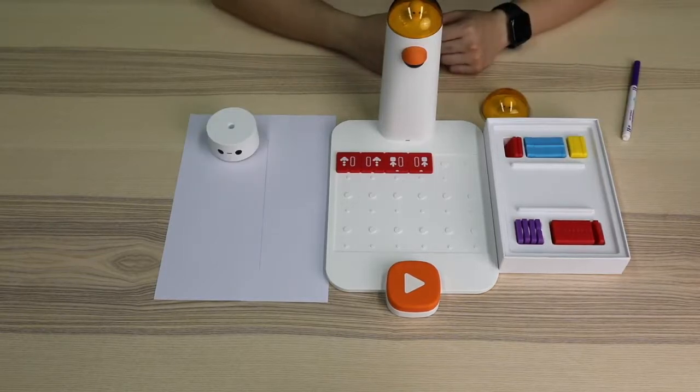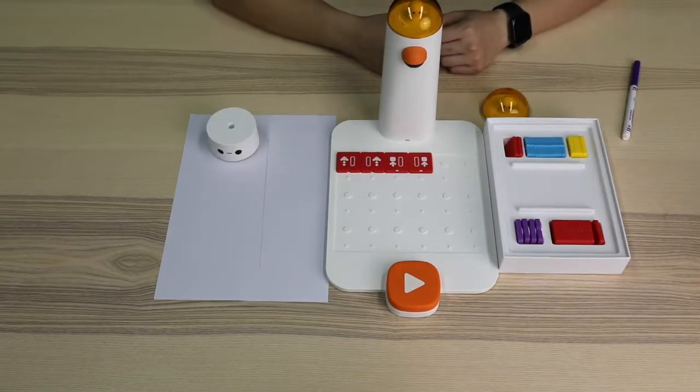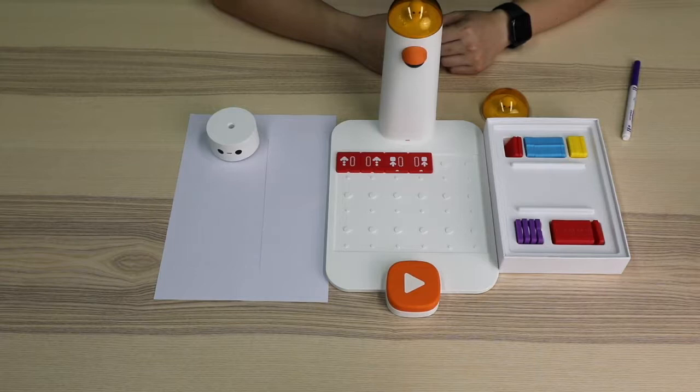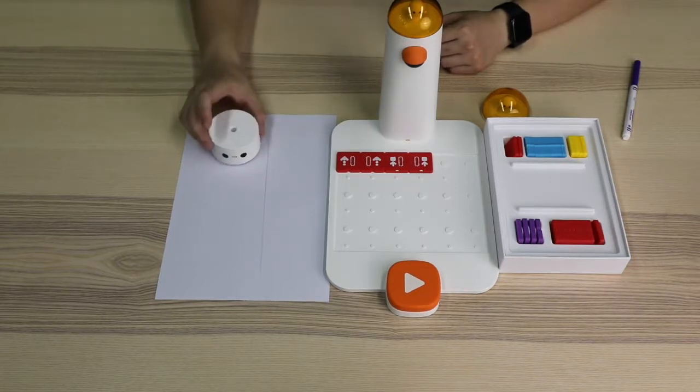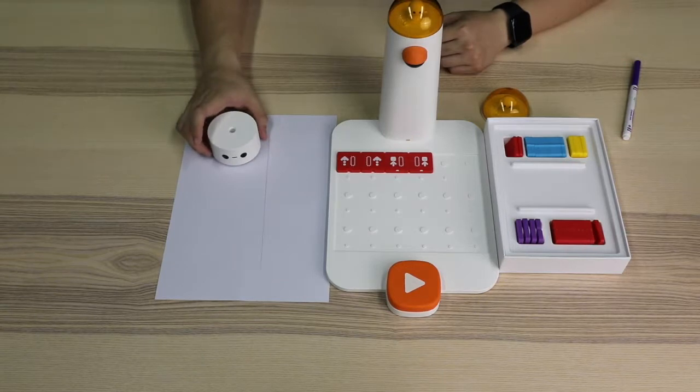While playing, we figure out that once the coding block instructions were sent, the Matata Bolt will follow the instructions indefinitely. The way to stop it is to put the stop wheel motion block accordingly to give the instructions, which is quite inconvenient.